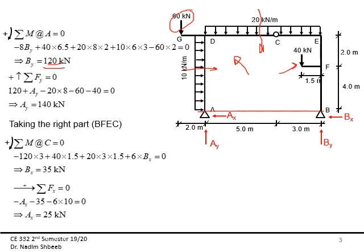Using summation of Fy equal to 0 gives Ay equal to 140 kilonewtons. Now I'm going to take the right part, since it has fewer loads. Summation of moment about C, the internal hinge, equal to 0, taking clockwise as positive. I have minus 120 times 3, plus 40 times 1.5, plus 20 times 3 times 1.5, giving Bx equal to 35 kilonewtons. Using summation of Fx equal to 0 gives Ax equal to 25 kilonewtons.